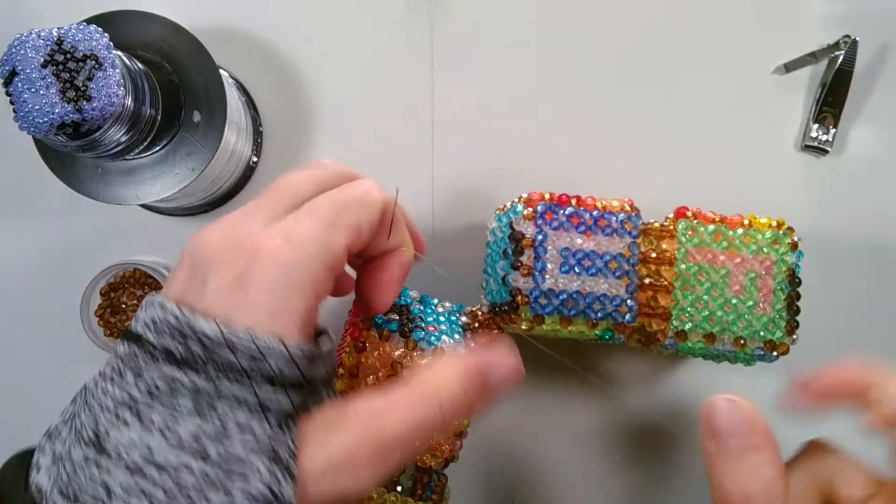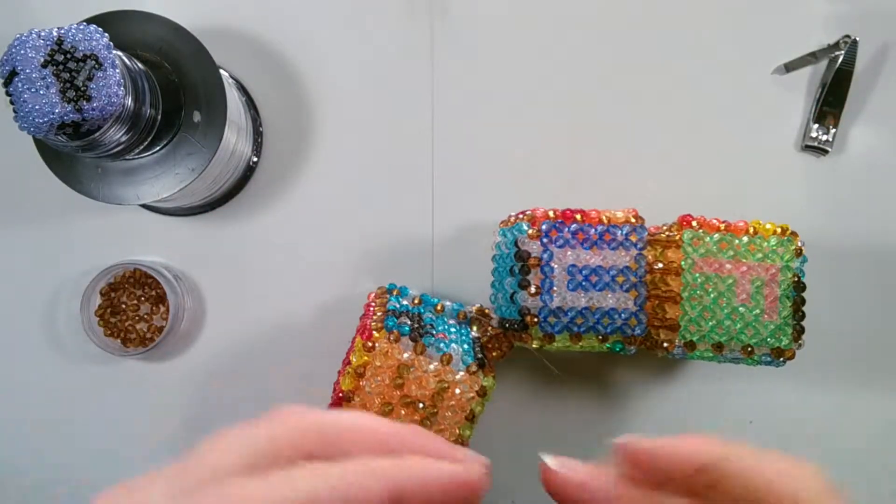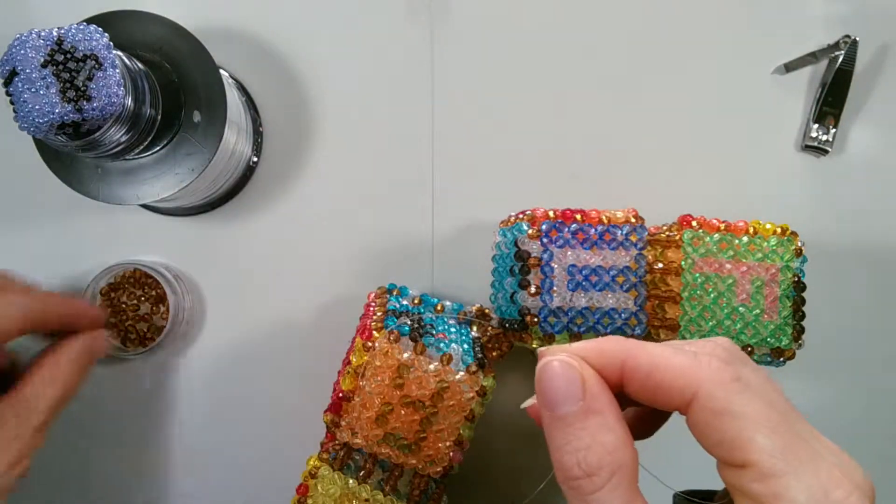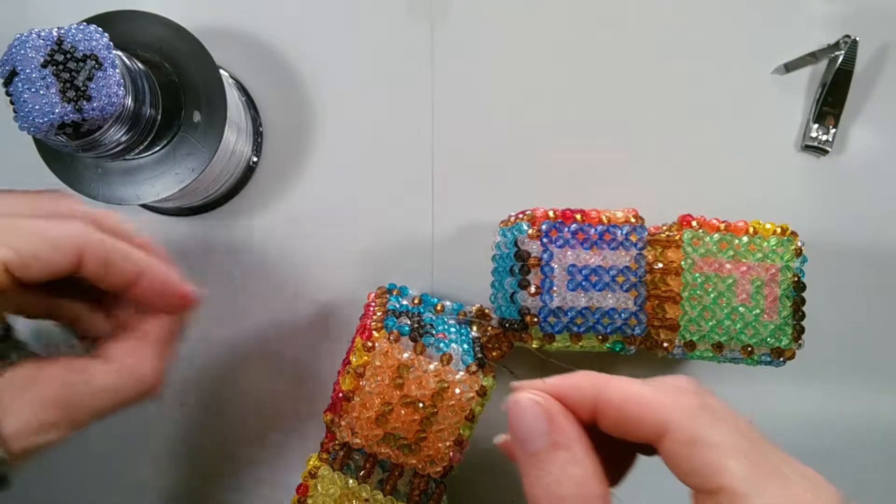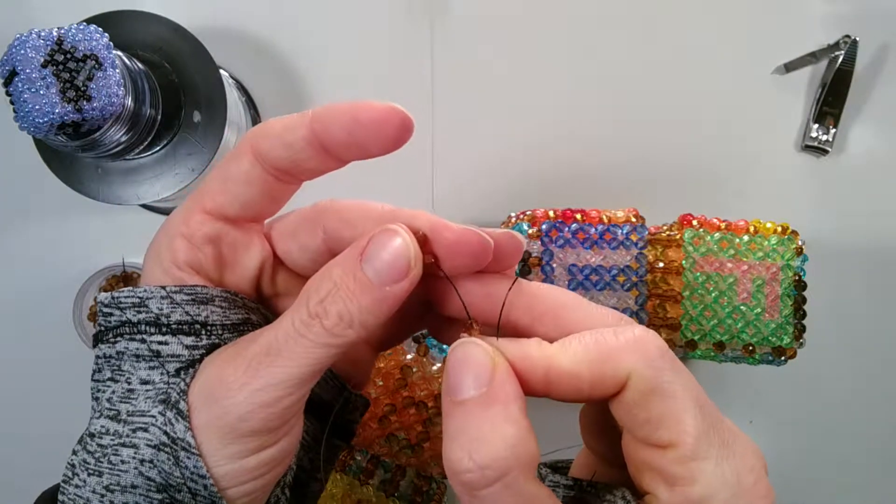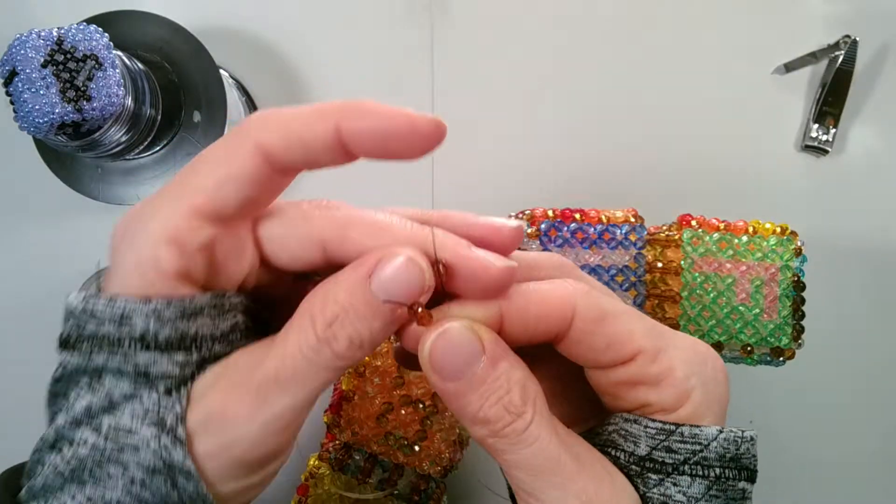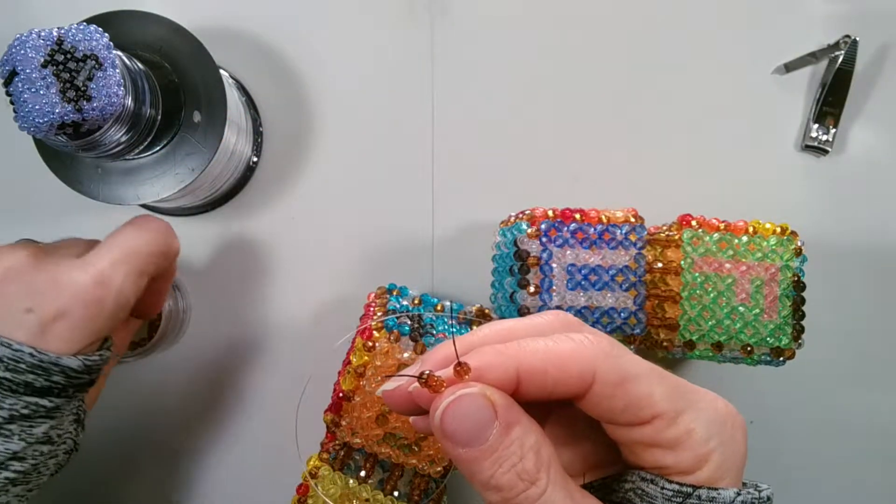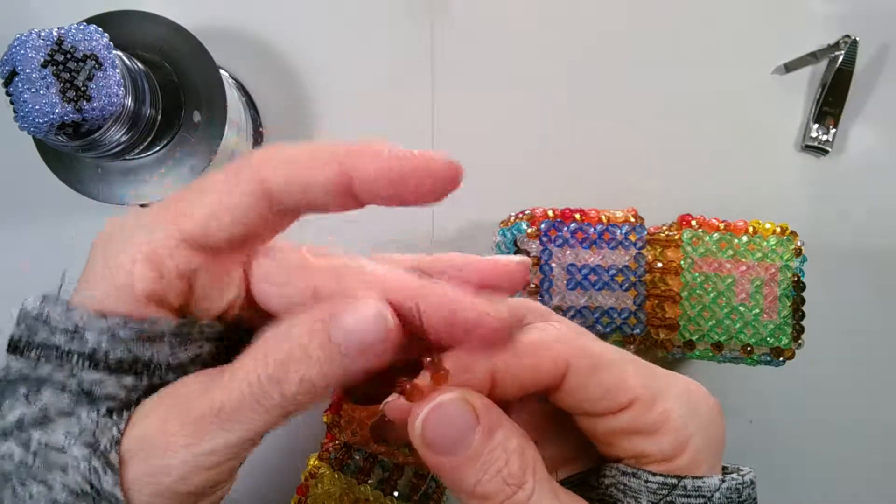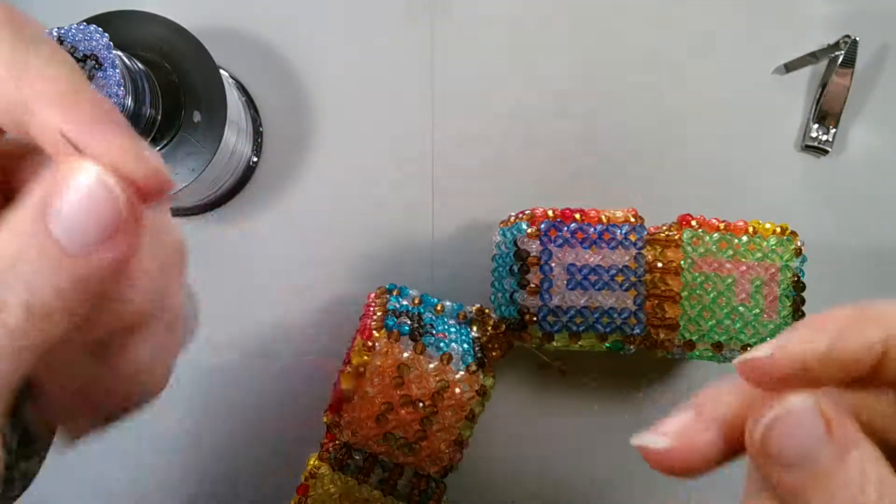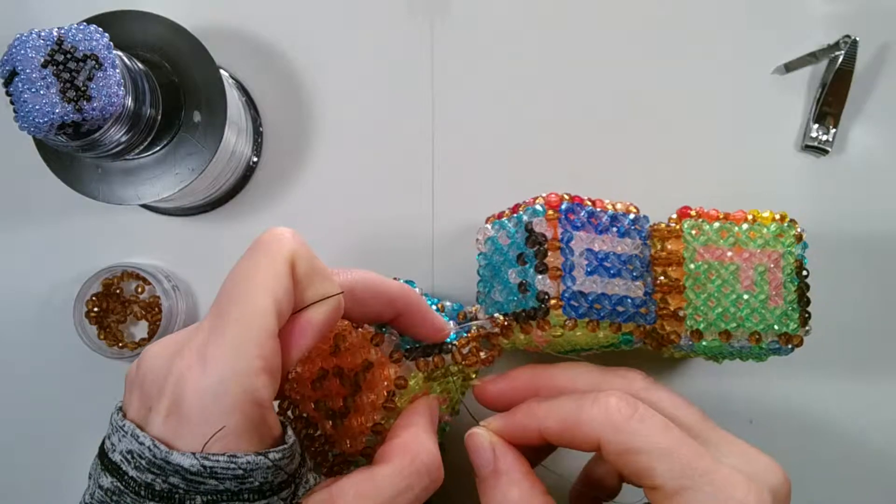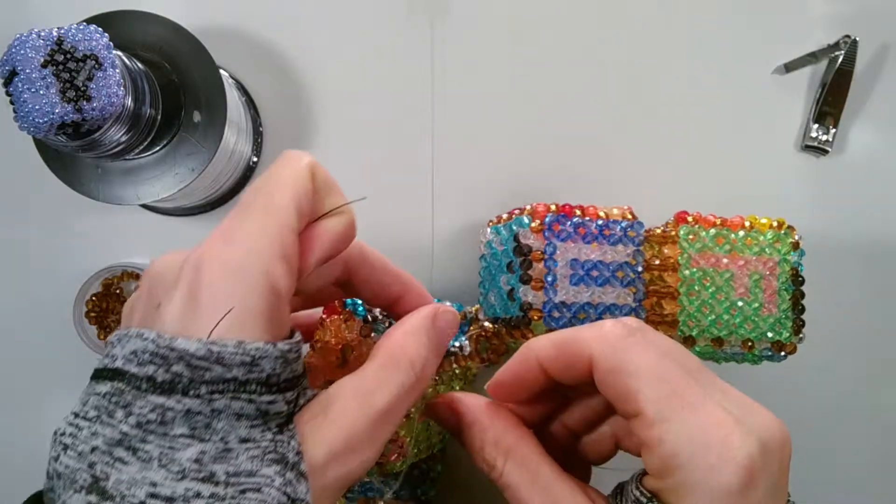About the same length. So now we're going to add two beads to each string. And then on the opposite cube we will cross the next connection bead.